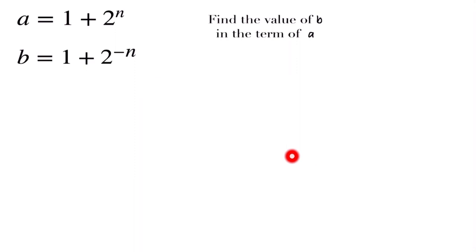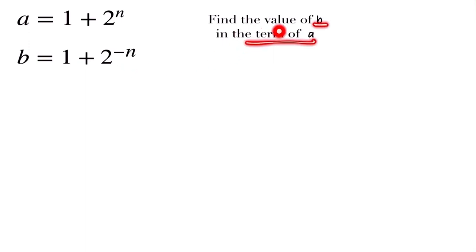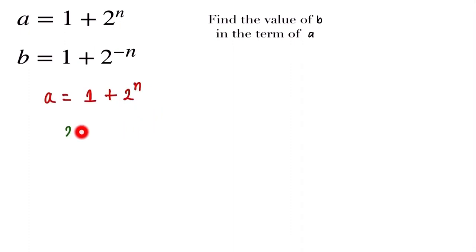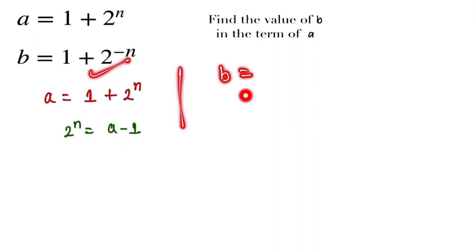Welcome back. Our question is: a is equal to 1 plus 2 to the power n, and b is equal to 1 plus 2 to the power minus n. We have to find the value of b in terms of a. We focus on the first part: a equals 1 plus 2 to the power n. From this equation, we find that 2 to the power n is equal to a minus 1.